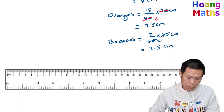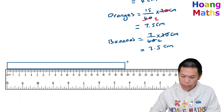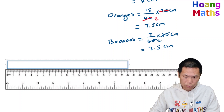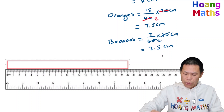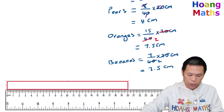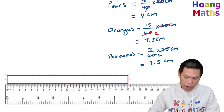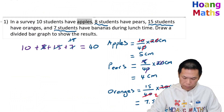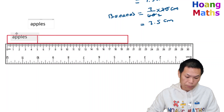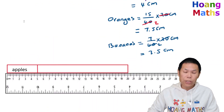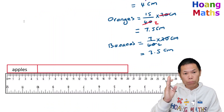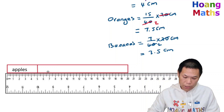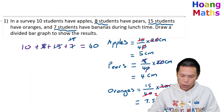Start from zero and draw the bar to 20 centimeters. For apples we need 5 centimeters, so mark at 5. That section is apples. For pears it's 4 centimeters — we start from 5 and add 4, so we mark at 9. From 5 to 9 is 4 centimeters. That section is pears.